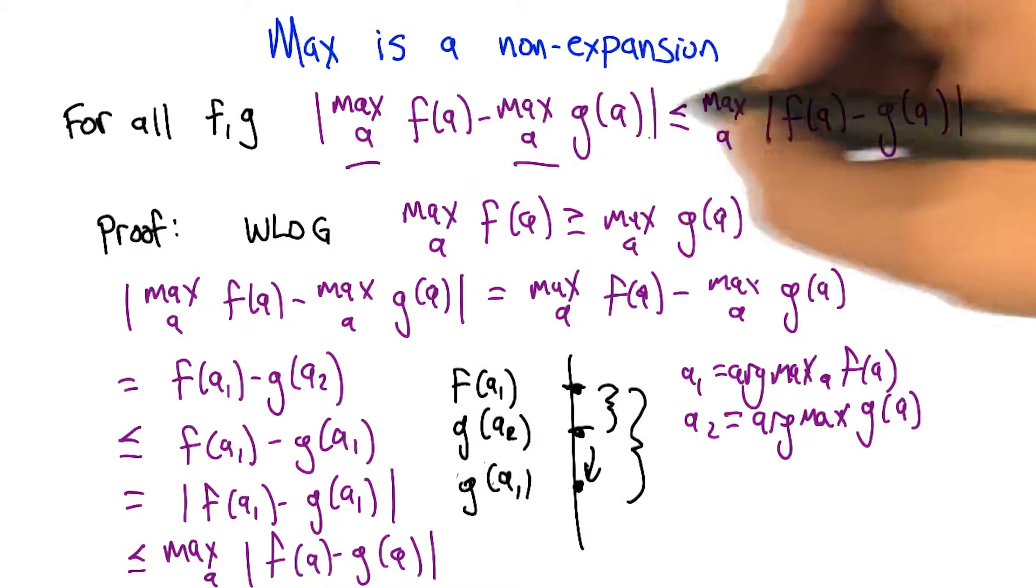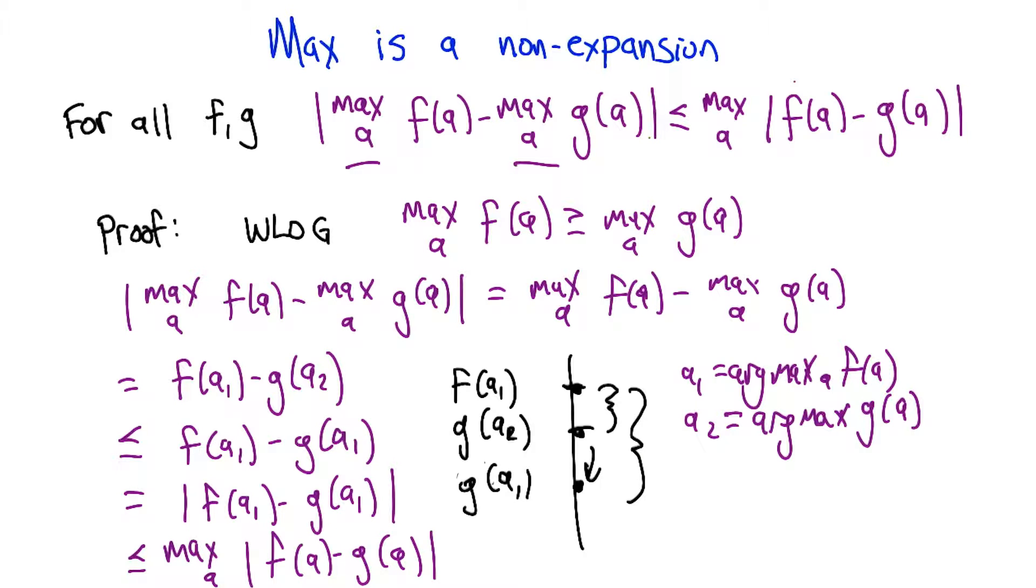Right. That's awesome. Good. Okay. So I get it. So, the Bellman operator is a contraction operator, value iteration works. Yes, indeed.